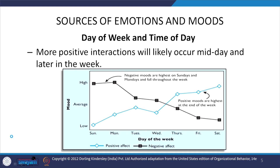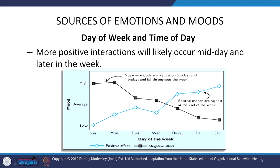Looking at sources of emotions and mood through a weekly graph, you can identify how your mood swings across days — Sunday through Saturday — at low, average, and high levels. Following the blue line representing positive affect, more positive interactions are likely to occur midday and later in the week. Positive affect starts on Sunday, grows through the week, and reaches maximum on Saturday.